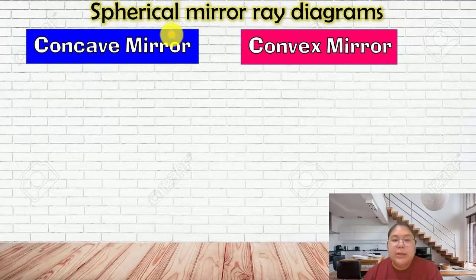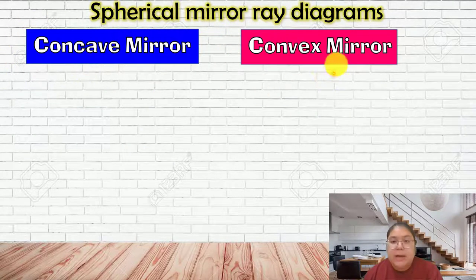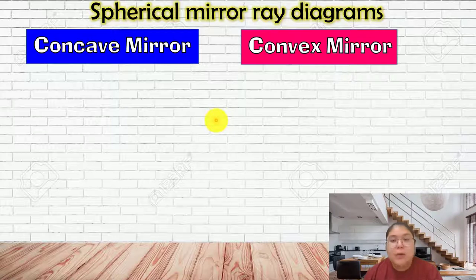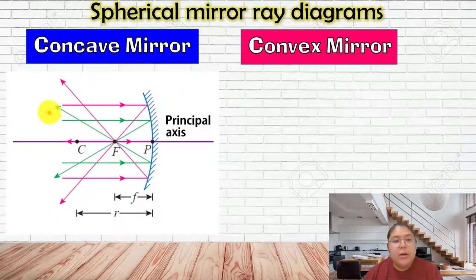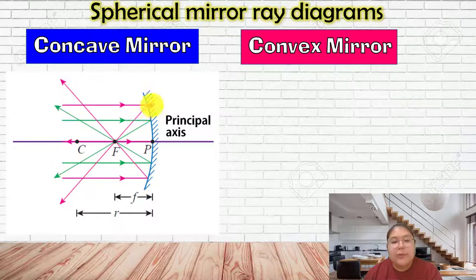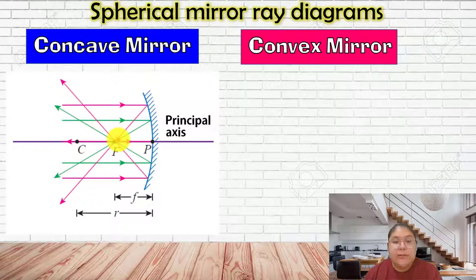Now we learn about the two spherical mirrors - concave and convex. We need to find out the ray diagram when light hits them and how they reflect. For the concave mirror, all light rays are parallel - parallel means from a distant object. When they hit the mirror, they are reflected and go to the focal point, which we call capital F.